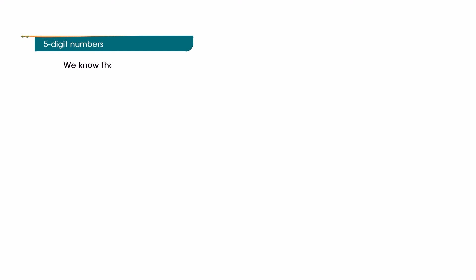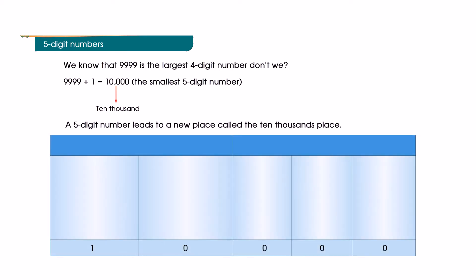We know that 9999 is the largest 4-digit number, don't we? 9999 plus 1 equals 10,000, the smallest 5-digit number.